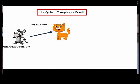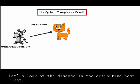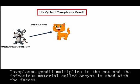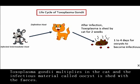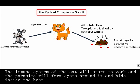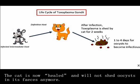Life cycle of Toxoplasma gondii. In the definitive host, the cat, infection comes about by eating an infected intermediate host. Toxoplasma gondii multiplies in the cat, and the infectious material called oocysts is shed with the feces. At the same time, the Toxoplasma spreads over the body of the cat. The immune system of the cat will start to work, and the parasite will form cysts around itself and hide inside the host. The cat is now healed and will not shed oocysts in its feces anymore.